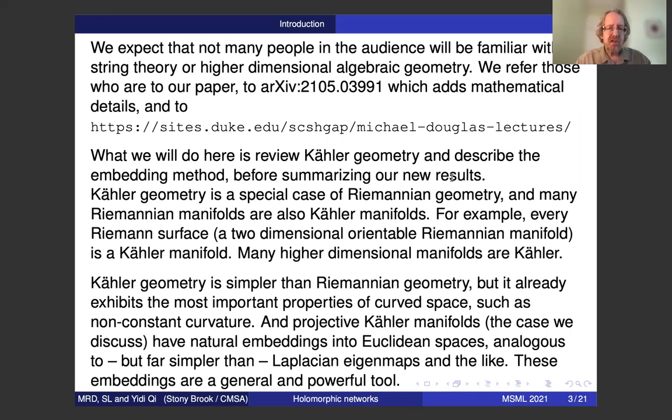Riemannian geometry, geometry of metrics and manifolds, has many applications in machine learning and elsewhere. If you use Riemannian geometry in your work, you should be interested in Kähler geometry because it's a special case which is much simpler. For example, a metric is determined by a single function on the manifold, but still general enough to exhibit the most important properties of general Riemannian geometry, such as non-constant curvature.